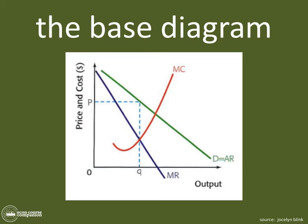This is our marginal revenue curve. If you don't understand the relationship between those two, go back and watch some earlier videos. Then we draw a marginal cost curve and find the profit maximizing level of output Q, drawing that up to price. That gives us our base diagram. If you try to memorize all of these diagrams in economics, especially in theory of the firm, you're not going to be able to do it.